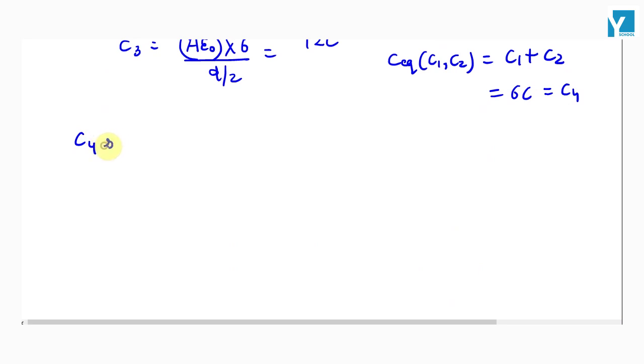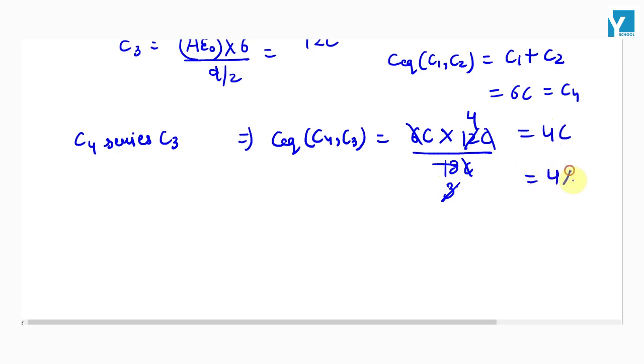C1 and C2 in series with C3: 6C times 12C divided by 6C plus 12C equals 72C divided by 18C, which gives 4C. This is 4A epsilon naught by d.